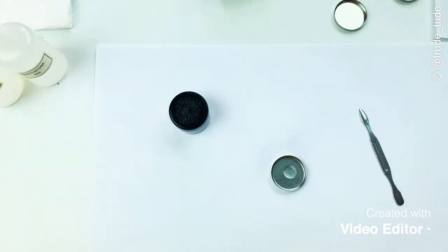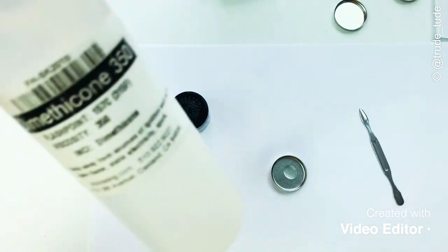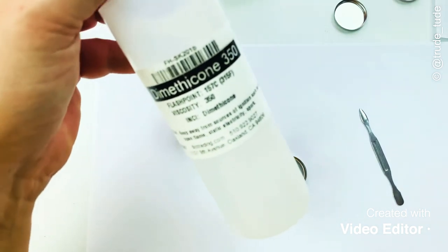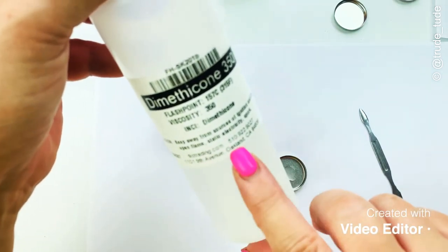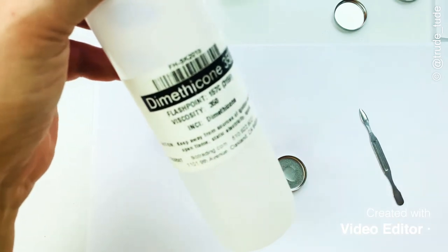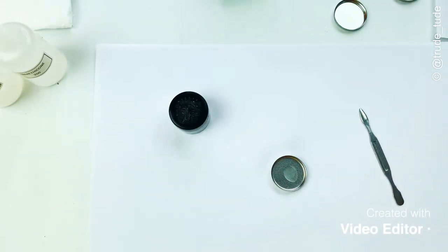Now the new addition comes in here where I am adding some dimethicone. So this is dimethicone 350, which we can get from TKB Trading. I have very oily eyelids and they're very hooded, so I'm very mindful about silicones on my face, but I'm finding adding one drop of this